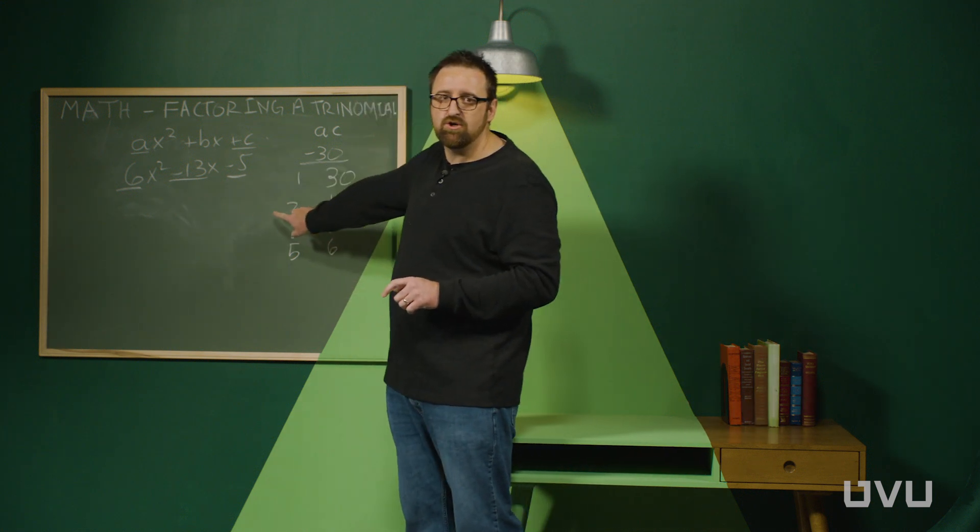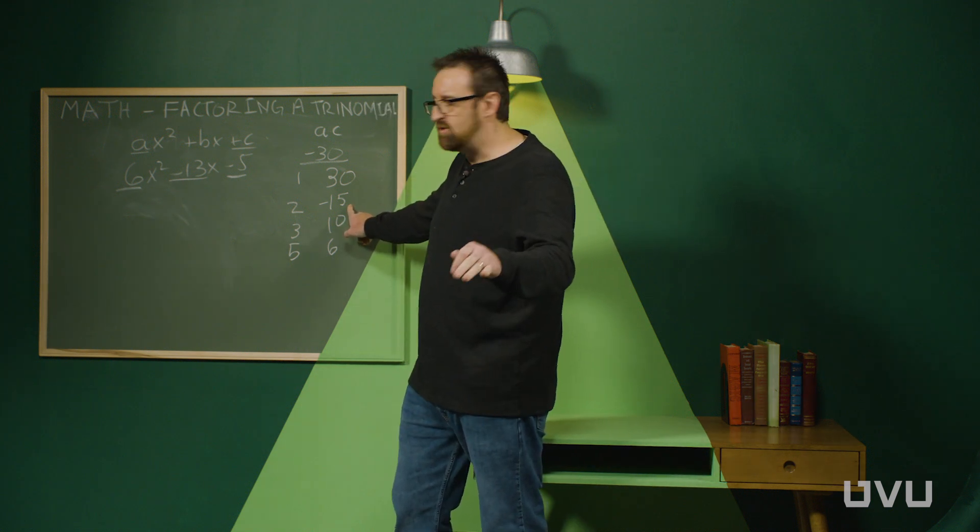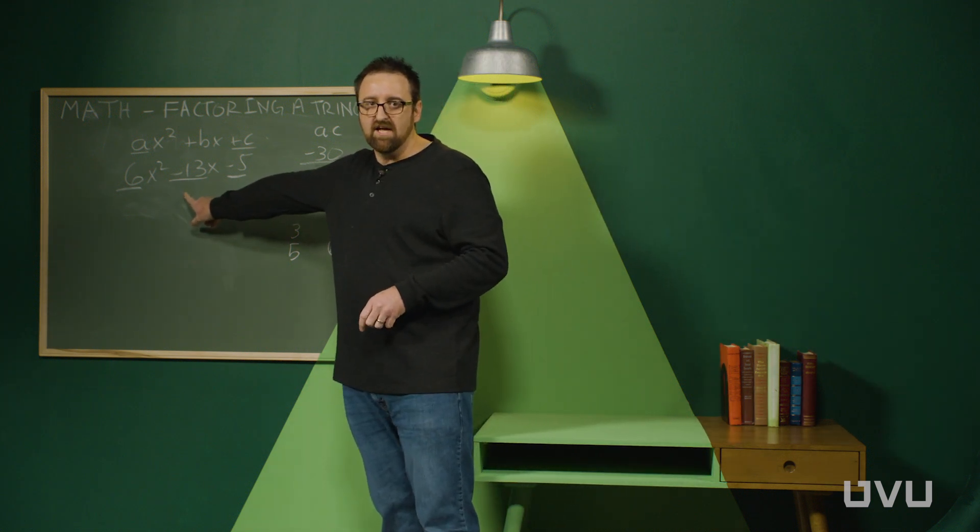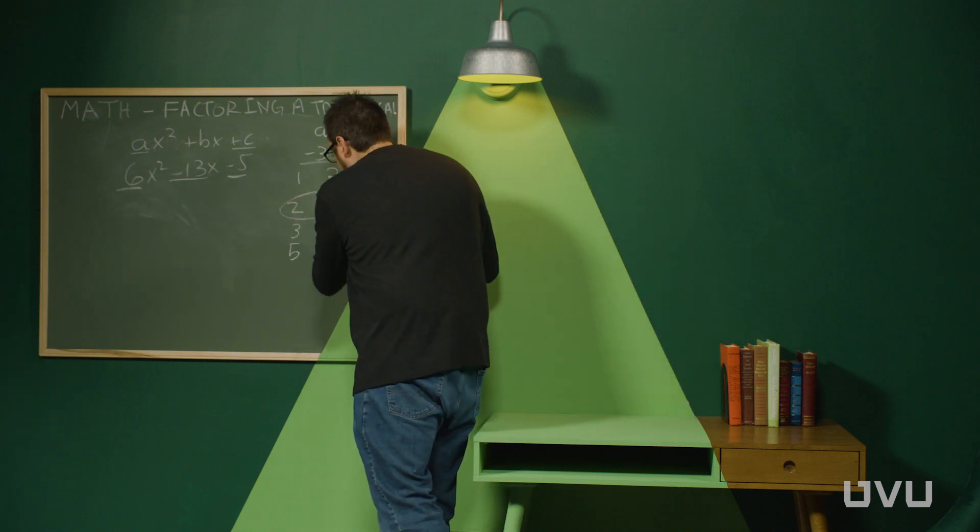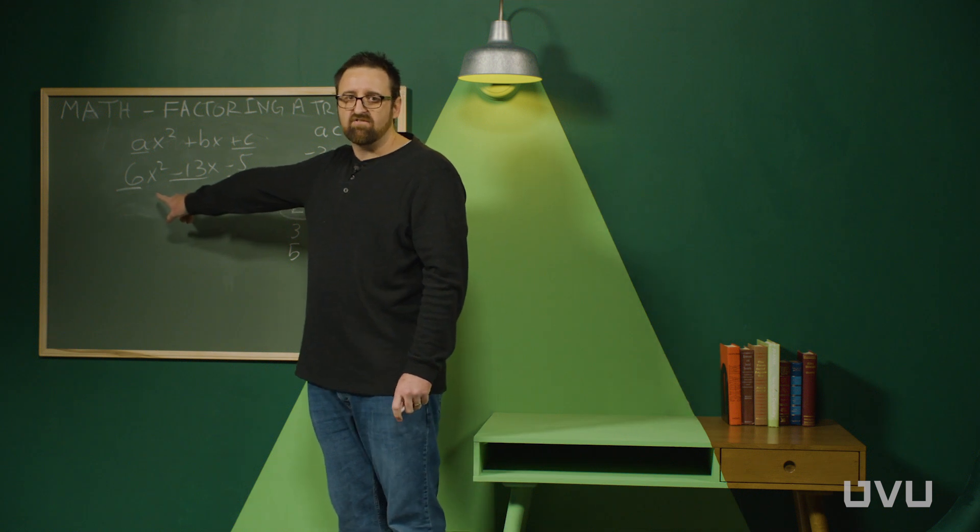So the one that actually works is the 15 and 2 with the 15 getting the negative. So negative 15 plus 2 would equal negative 13. And that's the pair that you need. So this pair is the pair that multiplies to negative 30 but adds to negative 13.